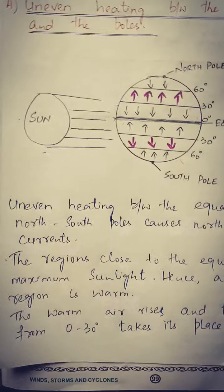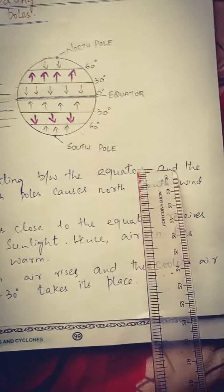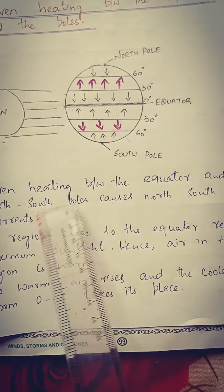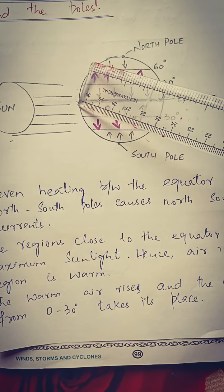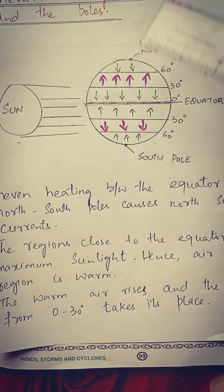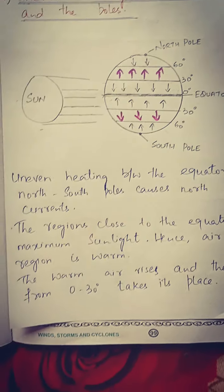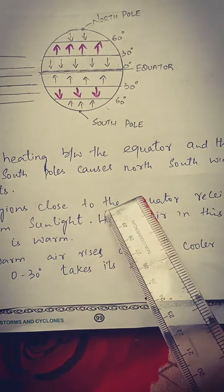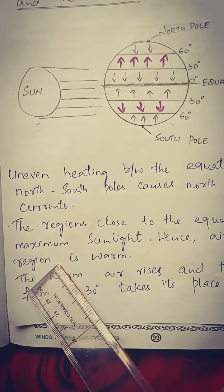Uneven heating between the equator and the north-south poles causes north-south wind currents. Jab uneven heating hogi equator aur north aur south pole ke beech mein, tab wahan pe north-south wind currents rise ho jaati hain. The region close to the equator receives maximum sunlight, hence air in this region is warm.